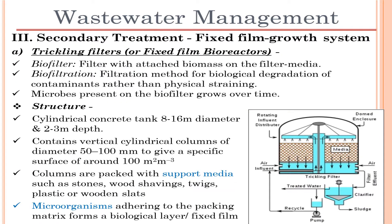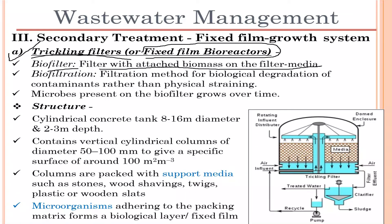Starting with the first system, which is trickling filters, these come under fixed film bioreactors. A trickling filter has a biofilter, which is basically a filter with attached biomass on the filter media. It helps in the biofiltration process — it is a basic filtration process for biological degradation of contaminants rather than physical straining.